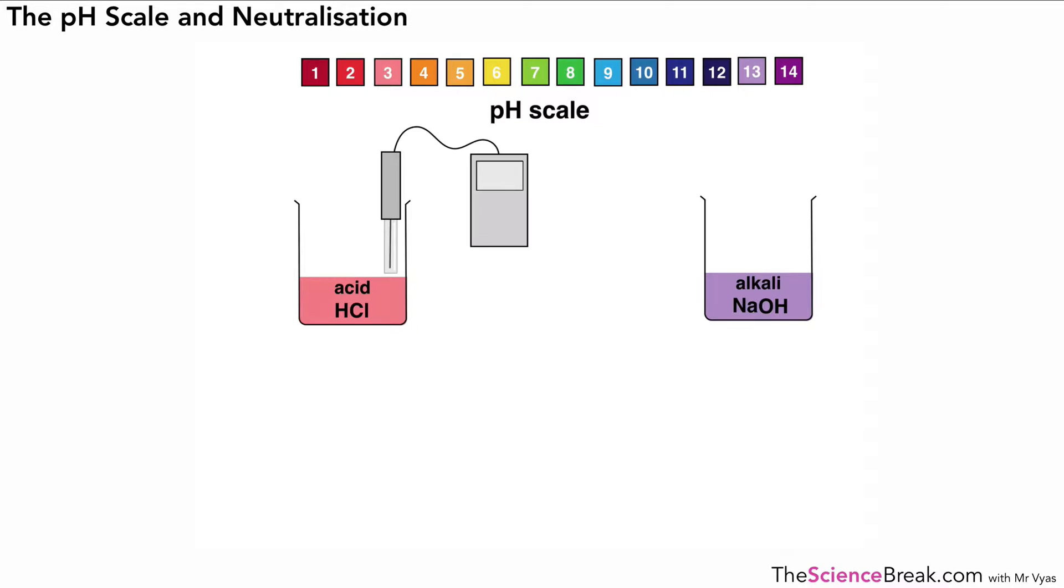Another way of measuring the pH is by not using universal indicator but by using a pH probe. We just put the probe into the liquid or the chemical or the solution and that gives you a value of the pH. For example, pH 2.8. You might notice it's actually a bit more accurate than using the color scale which just gives us whole number approximations for the pH.